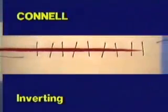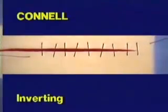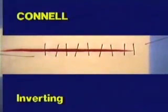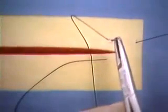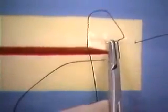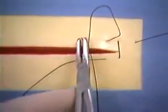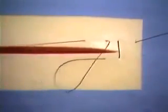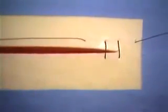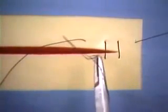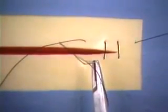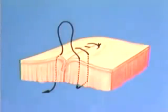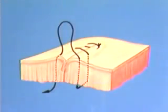The next pattern to be demonstrated is the Connell suture pattern. This is an inverting suture pattern. The Connell pattern differs from the Cushing in that the suture penetrates all layers of the wall into the lumen with each needle bite. This illustration shows a completed Connell suture pattern.